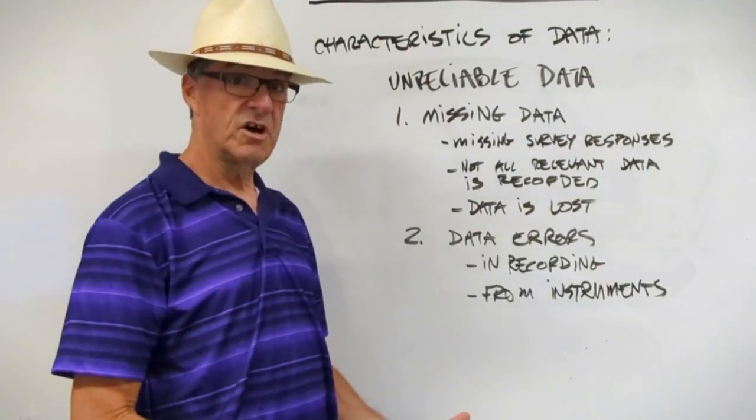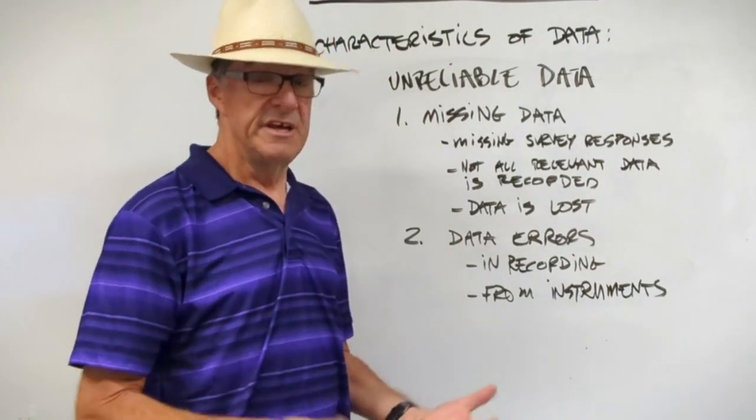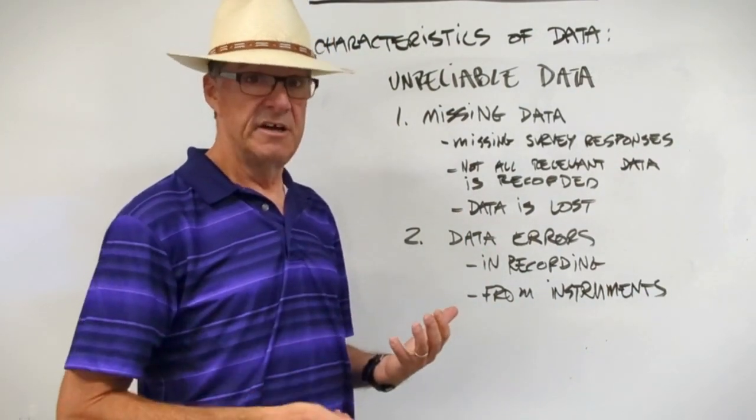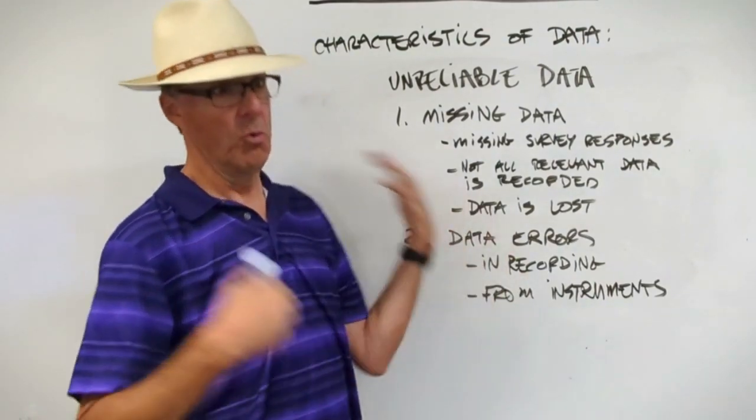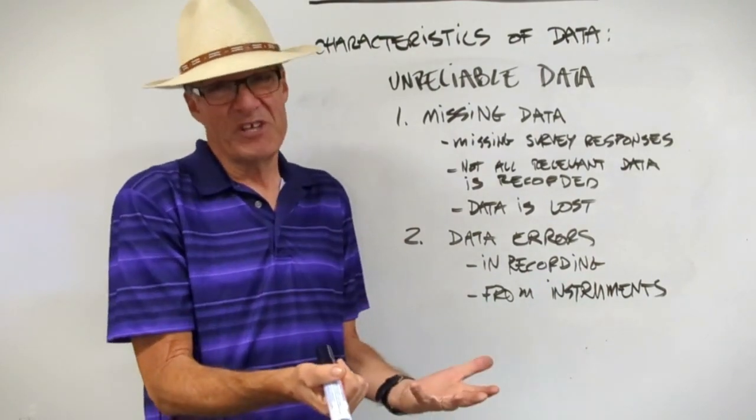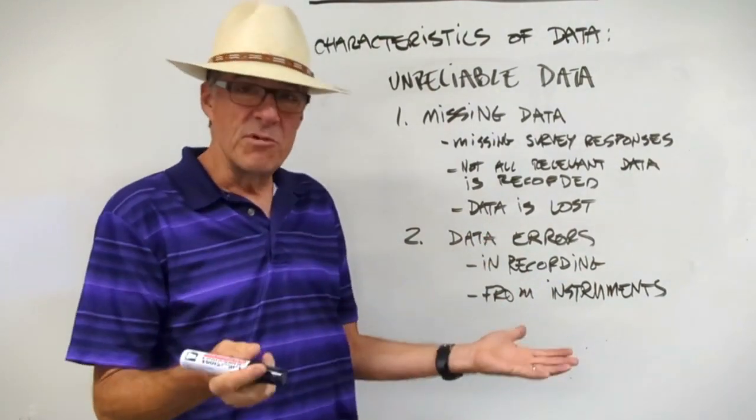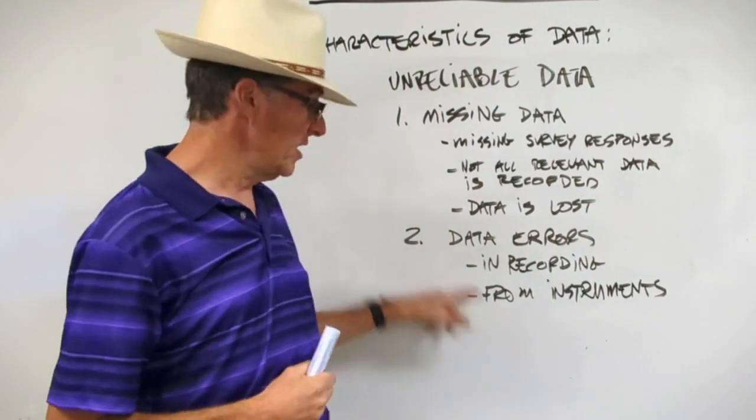The second cause for unreliable data is data errors. Perhaps the most common is just recording data. Let's say you're out there in a field with your clipboard and your pencil and you're writing stuff down and the wind is blowing and it's raining and you write things down wrong. It's stressful. You write the wrong number, things like that. That happens. We're human beings. So there's errors in recording.